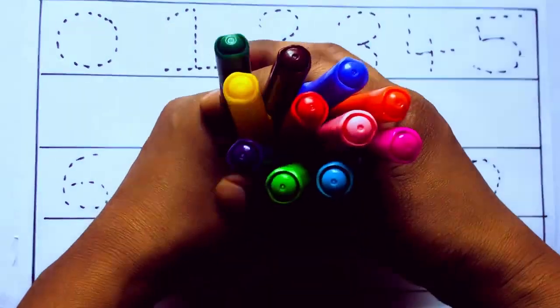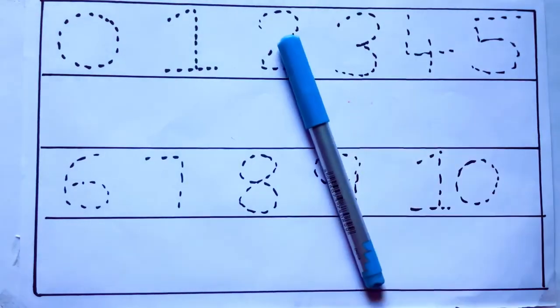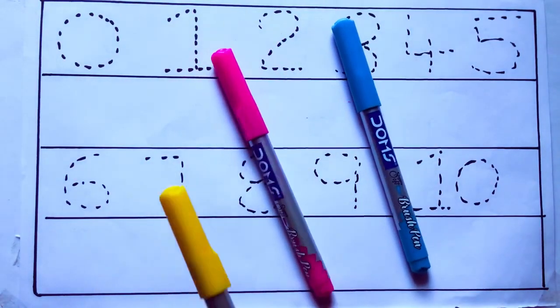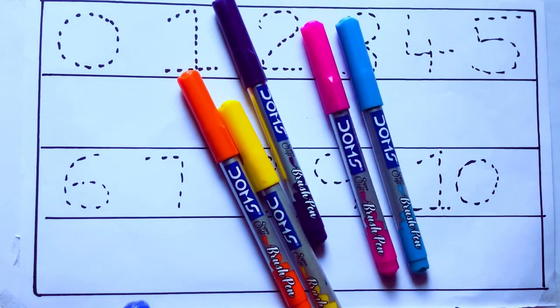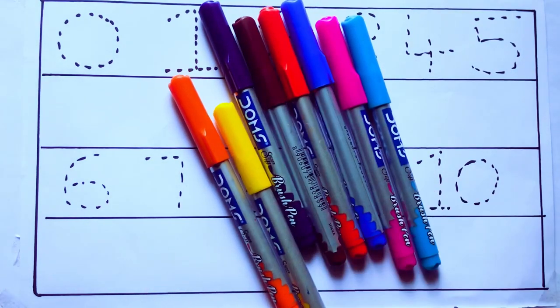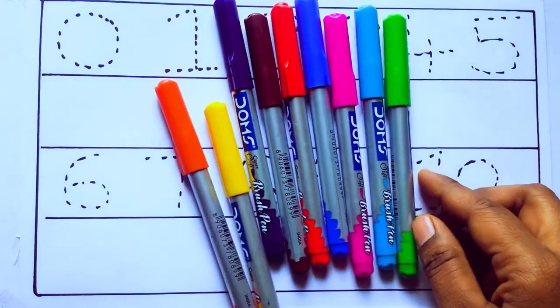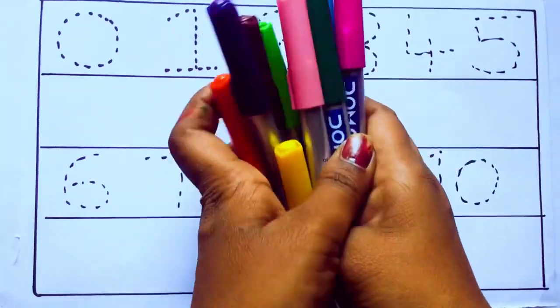Let's learn some colors. These are all the color pencils. Let's learn the names. Sky blue color, pink color, yellow color, orange color, violet color, blue color, brown color, red color, green color, and pink color.